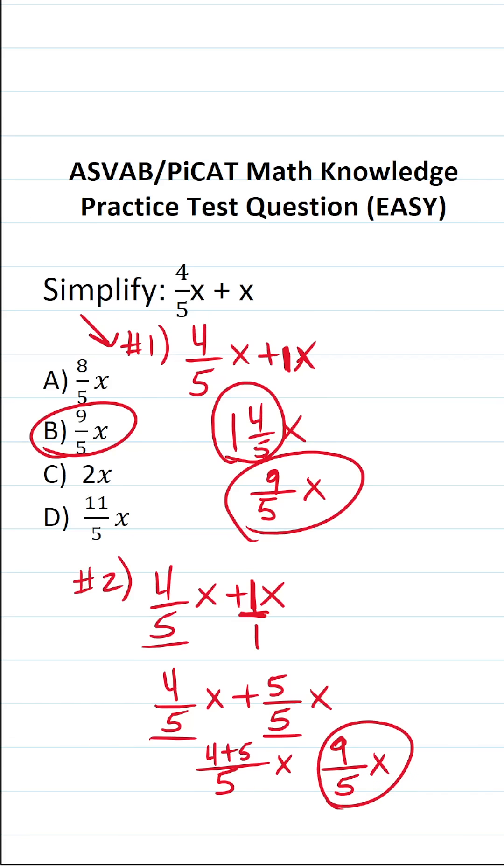So regardless of how you solve that one, whether you convert the mixed number back to an improper fraction, or you simply add fractions, you can see that you get the same answer and about the same number of steps.